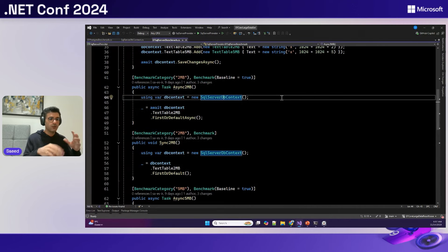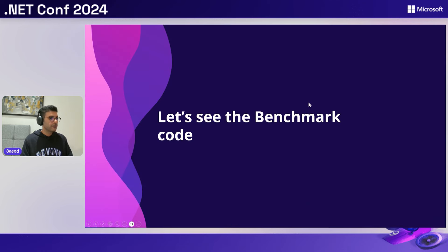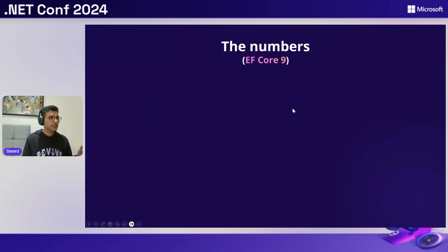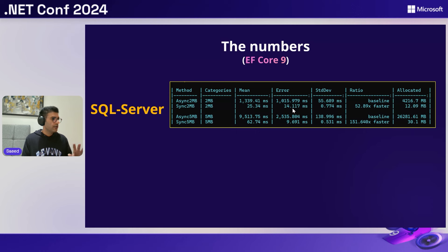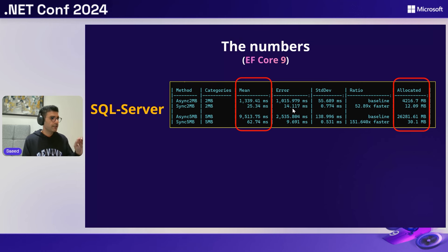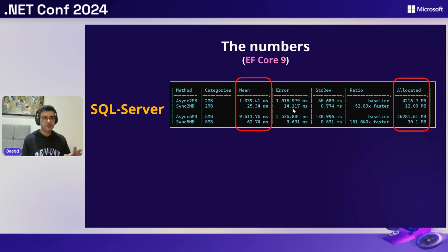For the sake of time, I won't run the benchmark live since it takes a while, but I already have the results. This is the latest EF Core version released. And here are the results for SQL Server, which are very surprising. As you can see, the async operation — FirstOrDefaultAsync — is taking more than one second, whereas the sync operation is only taking 25 milliseconds. That means sync is around 50 times faster than async.